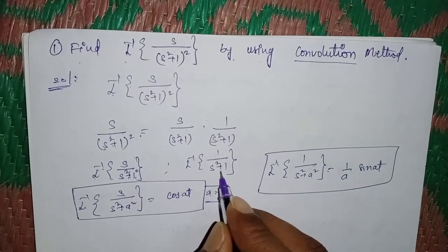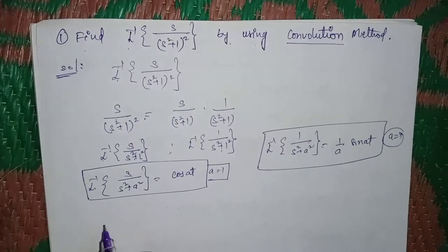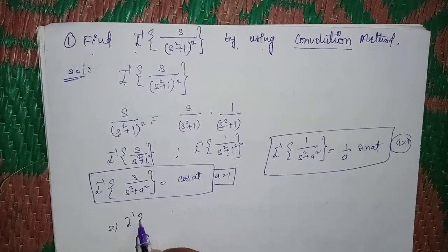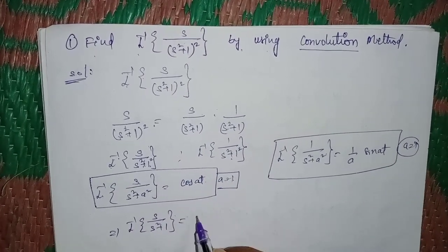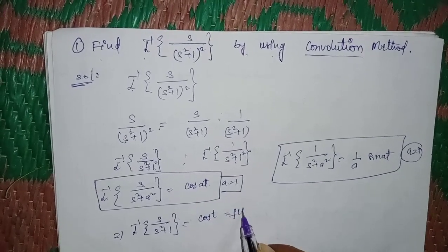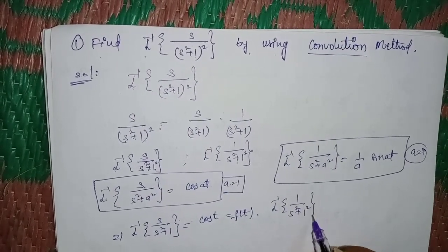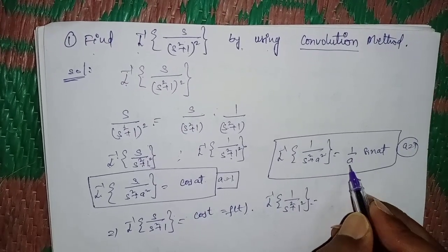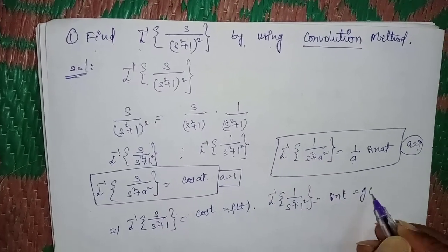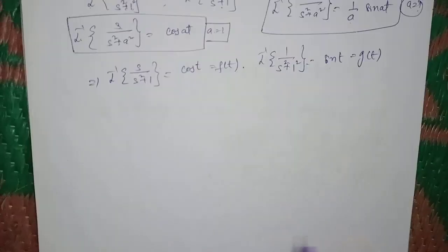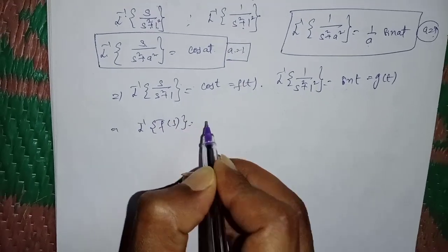Comparing both formulas: here a² = 1, so a = 1 for both. Substituting: L⁻¹ of s/(s²+1) = cos(t), which we call f(t). And L⁻¹ of 1/(s²+1) = (1/1)sin(t) = sin(t), which we call g(t).